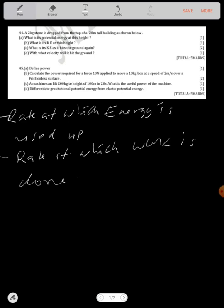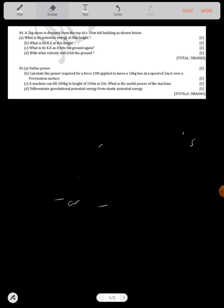Calculate the power required for a force of 10 newtons applied to move a 10 kg box at a speed of 2 meters over a frictionless surface. Now you need to know that power is equal to energy or work done over time taken. In this case, looking at what we've been given, we have 10 newtons, we also have mass of 10 kg and we have this. Or power is equal to force times speed. You can also find power using those.